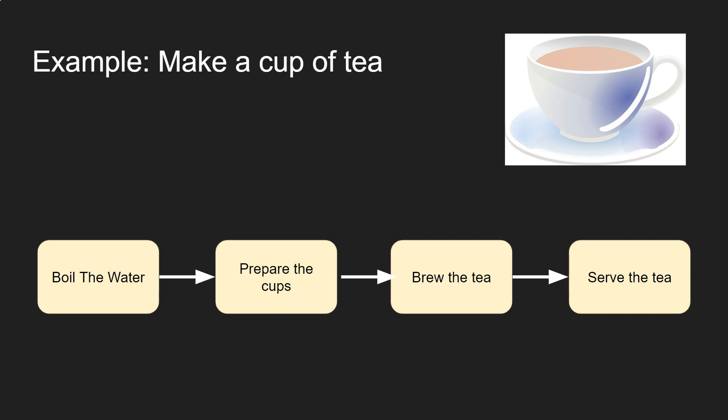I'd break the process down into four parts. First of all I'd boil the water, then I'd prepare the cups, then I'd actually brew the tea itself in the cups, and then I would serve the tea to people. So that would be the top level, that's the general algorithm, and now what I'd do is I'd look at each part in turn and I'd break those parts down into sub-steps. So I'm not going to go through all of them but let's have a look at the first one.